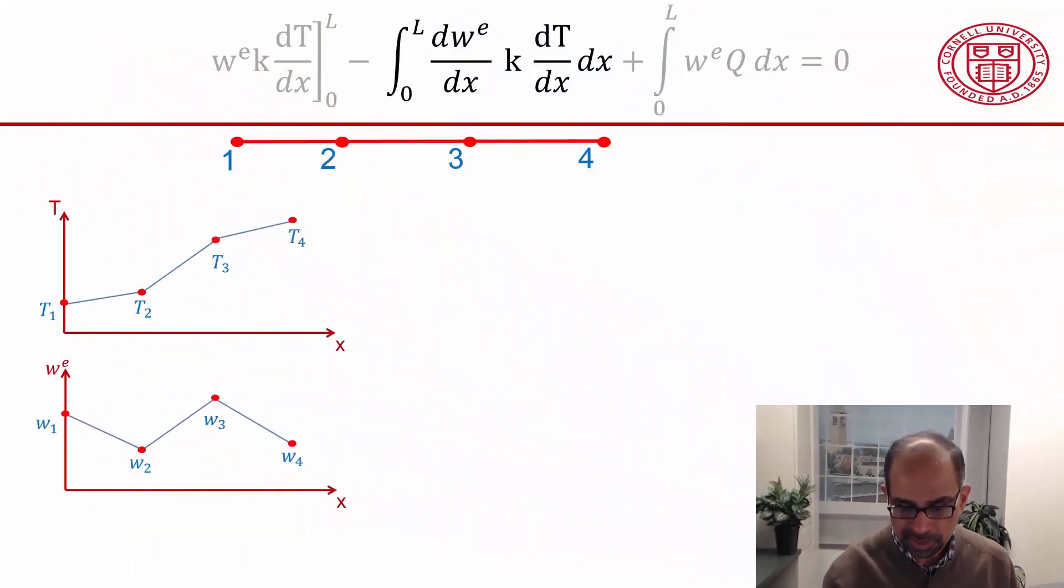Let's now take a look at the second term in the weak form. That's this term over here and it involves the derivative of the weighting function as well as the temperature. So my temperature variation is that and the corresponding variation of the derivative of the temperature is that.